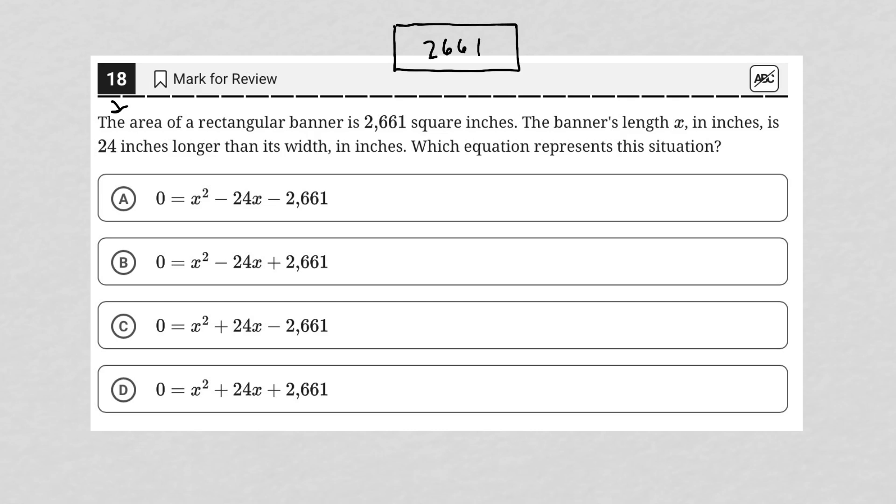It goes on to say the banner's length x, in inches, is 24 inches longer than its width. So that means the width is 24 inches less than the length. If the length is 24 inches longer than the width, then the width is the length minus 24. So I'll label those widths with x minus 24.